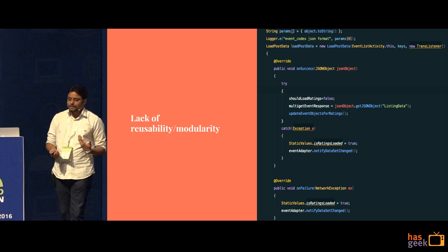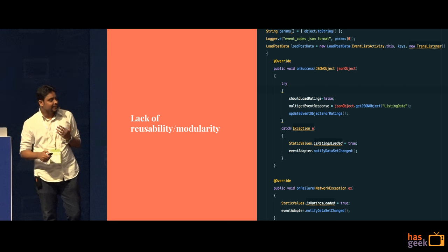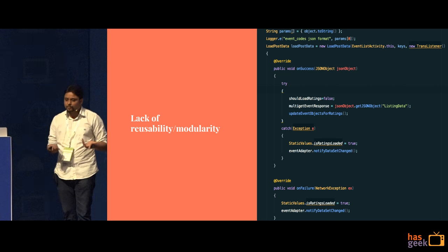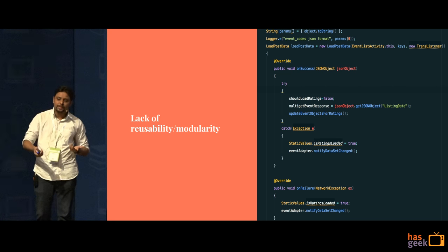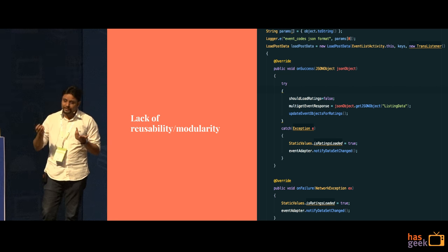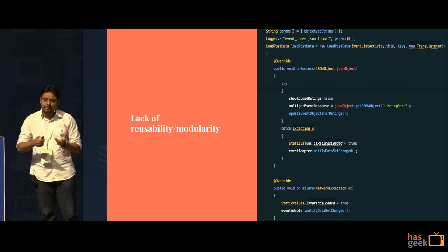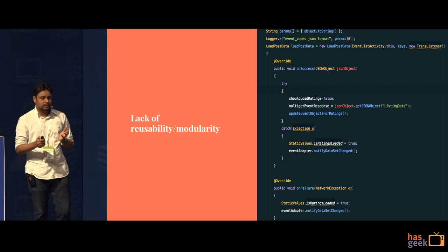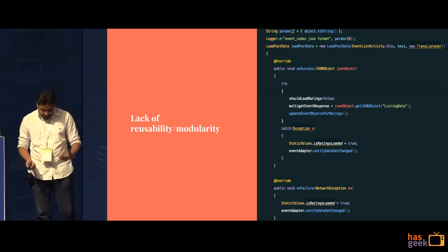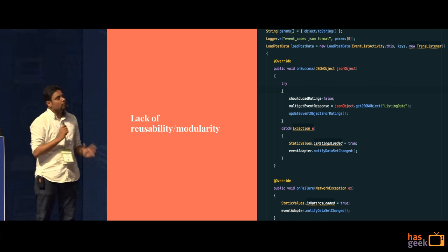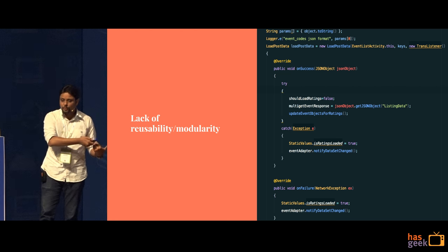Lack of reusability and modularity is again a big challenge we had. As an example — a rating screen in the app. You can rate a movie from multiple screens: via push notification, via the synopsis page of the movie, or via ticket history. The old app had the rate functionality written at all three places — each activity had the logic. It should have been in one single place so that rate as a functionality is one to the entire project.